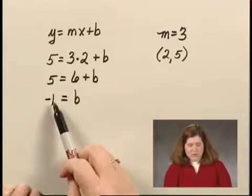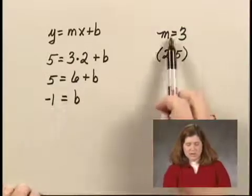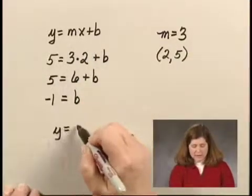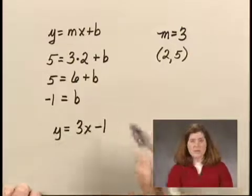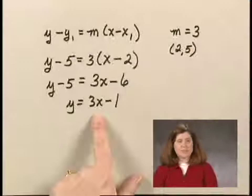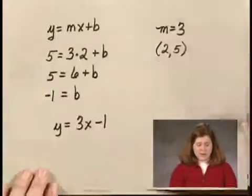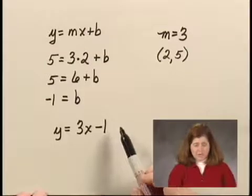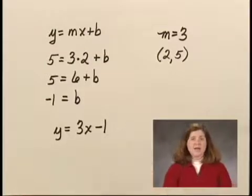Then I substitute negative 1 for b, 3 for m in this equation, and I have y equals 3x minus 1. Since this is the same as the equation I got earlier, that's a good check, and I can say that the equation of the line I'm looking for is y equals 3x minus 1.